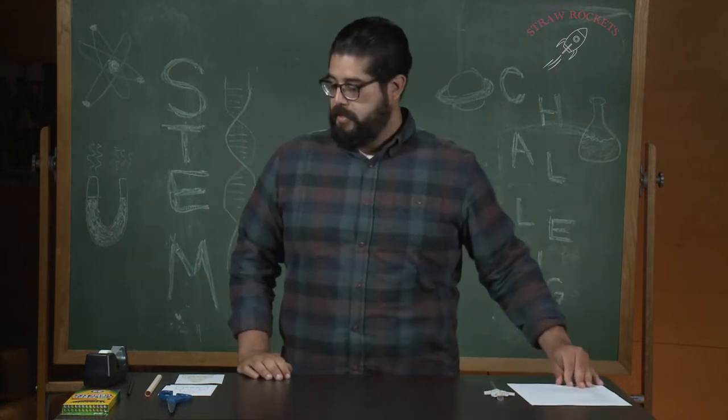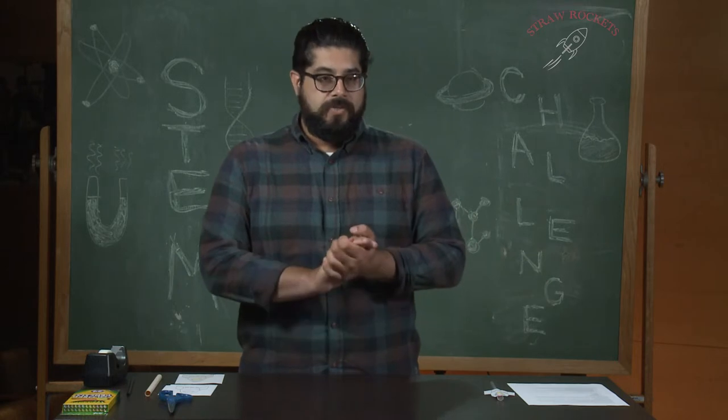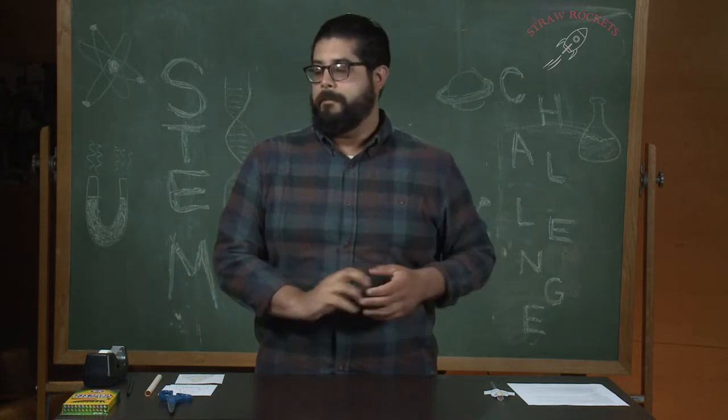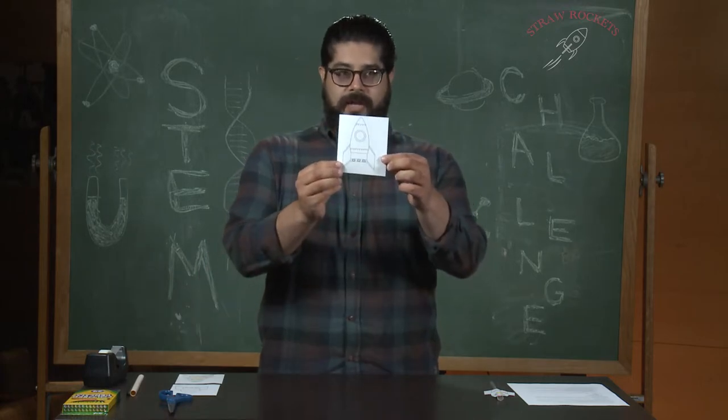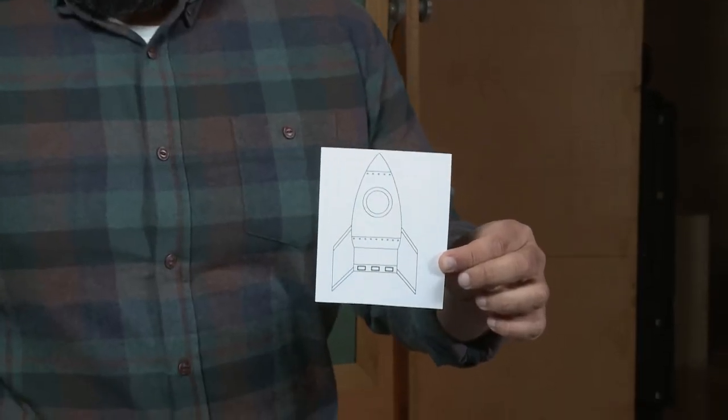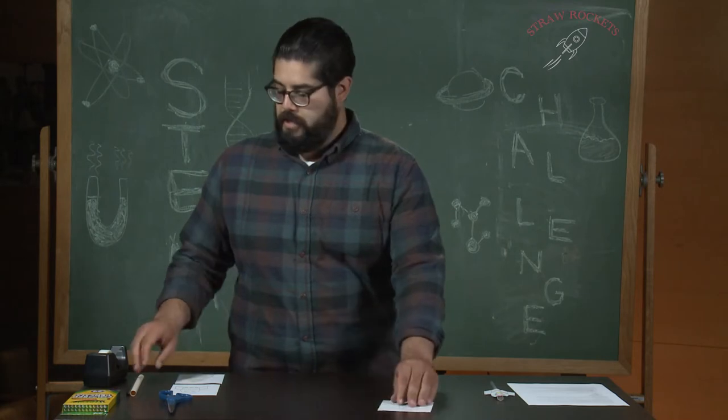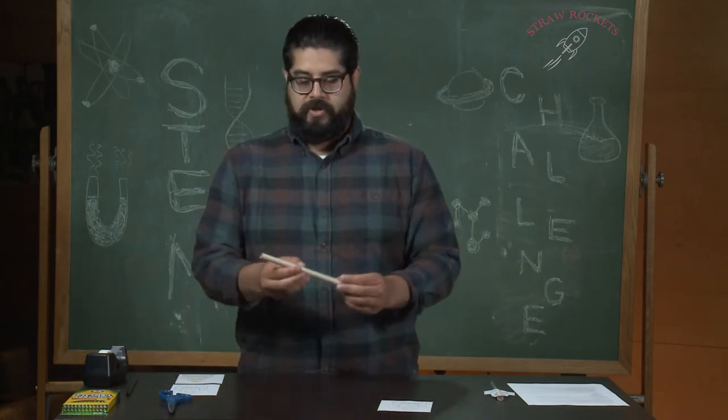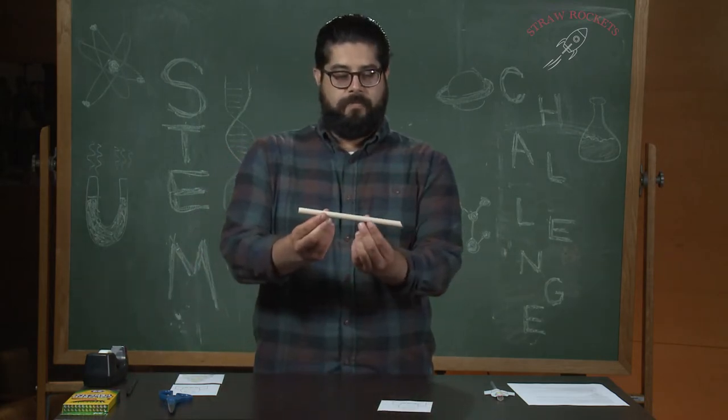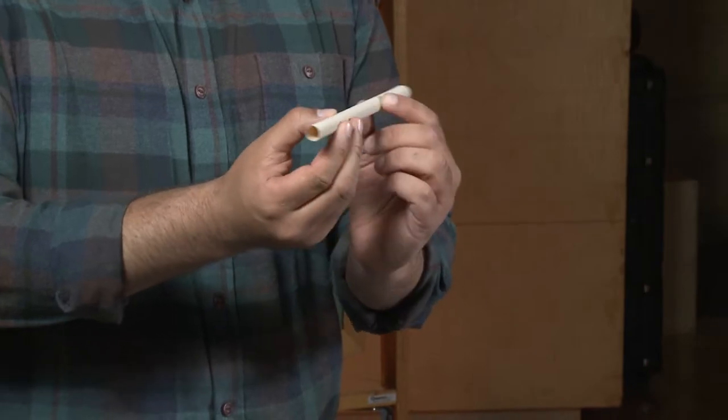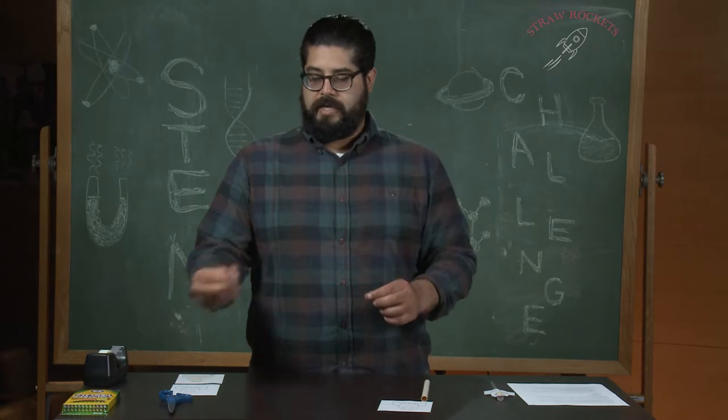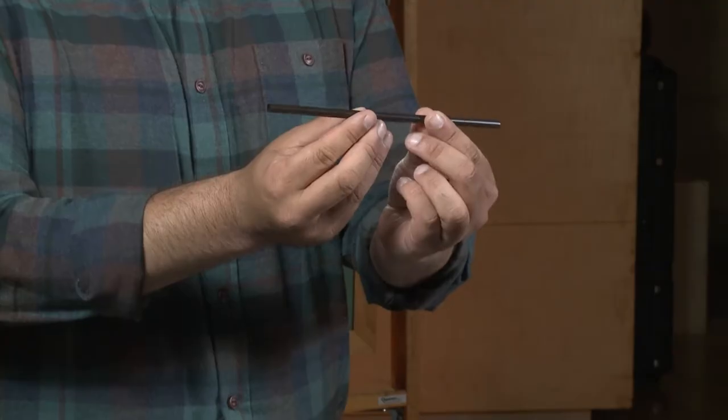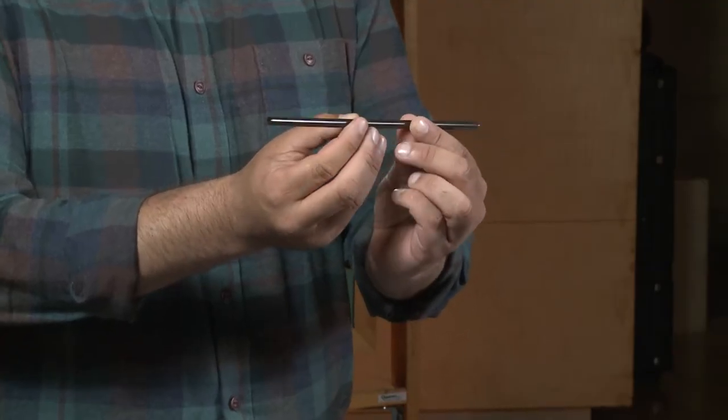First, I'm going to show you the materials you need to make your straw rocket. First thing you need is a rocket ship template, just like this. You need a couple of different straws. First, you need a boba straw, kind of a thick round straw. You need a standard drinking straw, kind of like this.